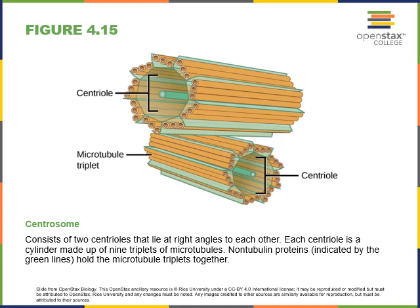The centrosome is an organelle formed from microtubules, located near the nucleus, and consisting of two units called centrioles. Each centriole is made from short cylinders of microtubules — specifically, nine triplets of microtubules bound together with other proteins form a cylinder called a centriole, and two centrioles together form a centrosome. The function of the centrosome is to direct the formation of microtubules.